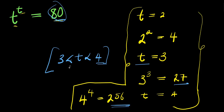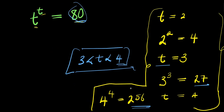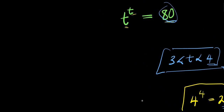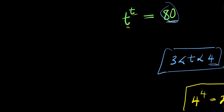In fact, it is greater than 3 but less than 4. That is the meaning of this inequality here. So it's greater than 3 but less than 4. With that in mind, we can know the range of values of our t, and we can solve this.